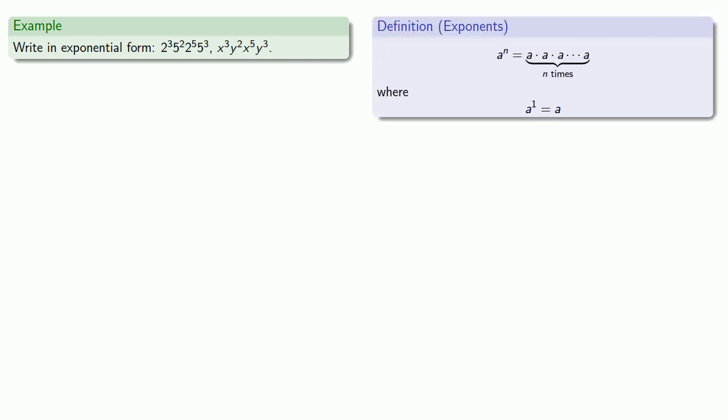So here, I want to rewrite in exponential form, 2 to the fifth, 5 to the second, 2 to the fifth, 5 to the third. Because an exponential expression is simply a multiplication, we can rearrange it in any order that we want. So let's rearrange it so the 2s and the 5s are next to each other.